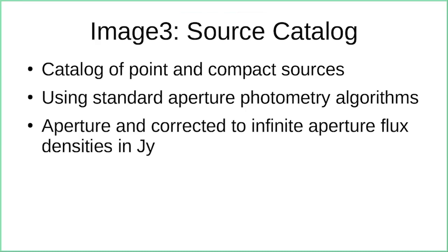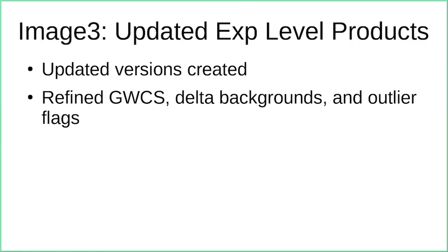A source catalog is produced from the mosaic, finding point and compact sources using standard aperture photometry algorithms, yielding aperture-corrected flux densities in janskys. Neither the mosaic nor the source catalog is necessarily meant for final science use, but may be sufficient or at least a good starting point. Finally, the improved knowledge of individual exposures — backgrounds, relative WCS, outlier flags — is written back to the exposure-level products, so users working at the exposure level have access to this ensemble information.